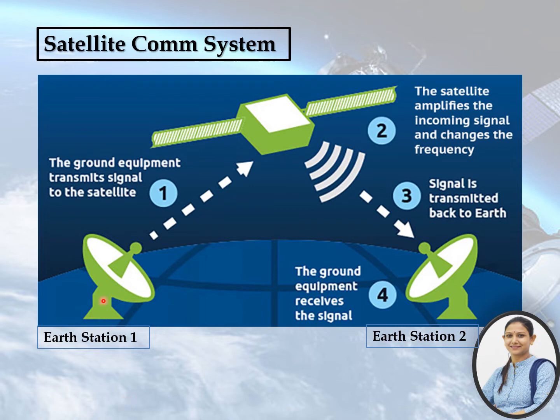With the help of this figure, we can understand the working of satellites. In this communication, electromagnetic waves are used as carrier signals. These signals carry information such as voice, audio, video, or any other data between ground and space.